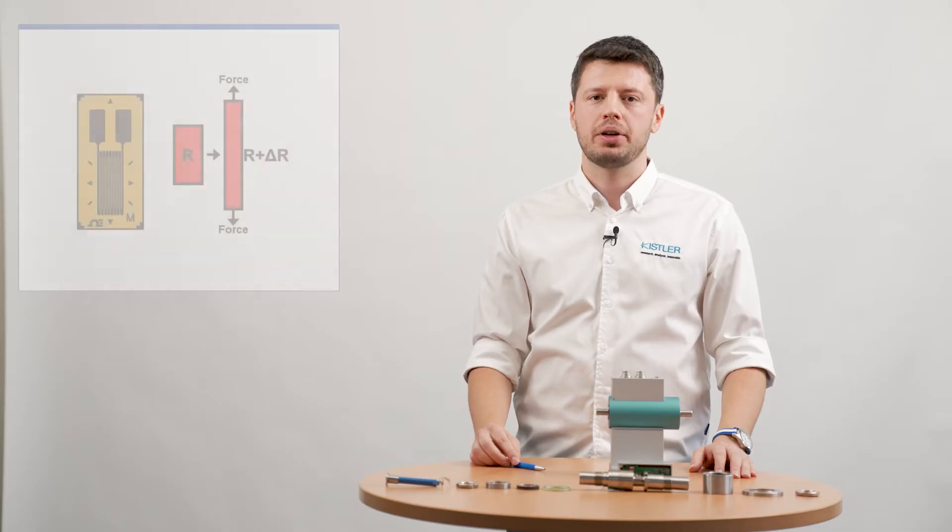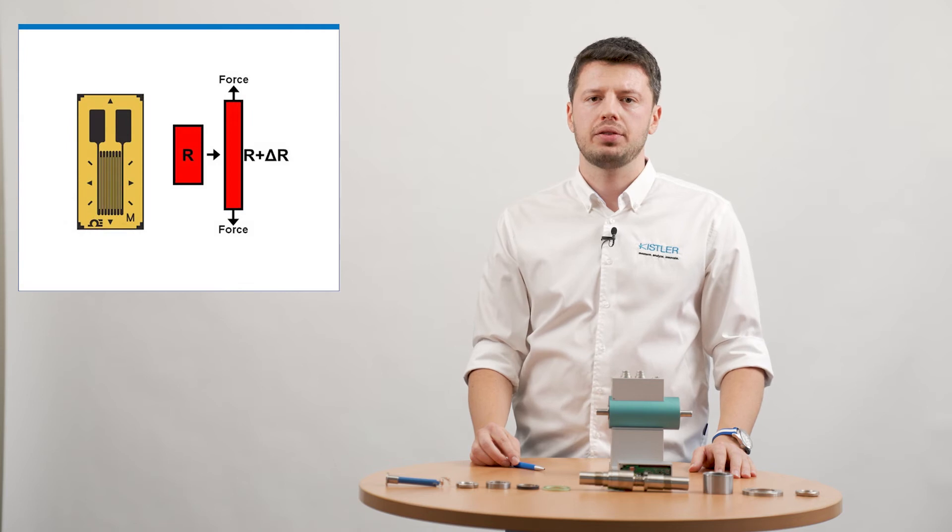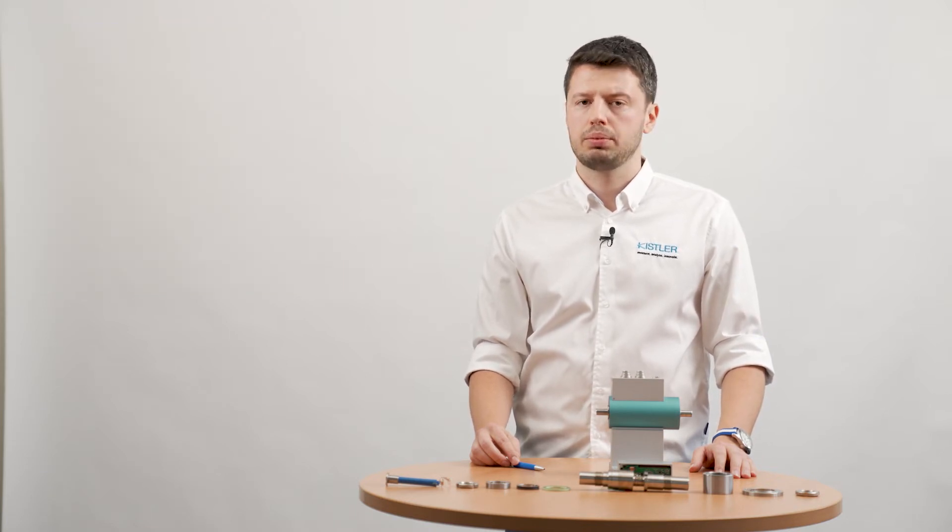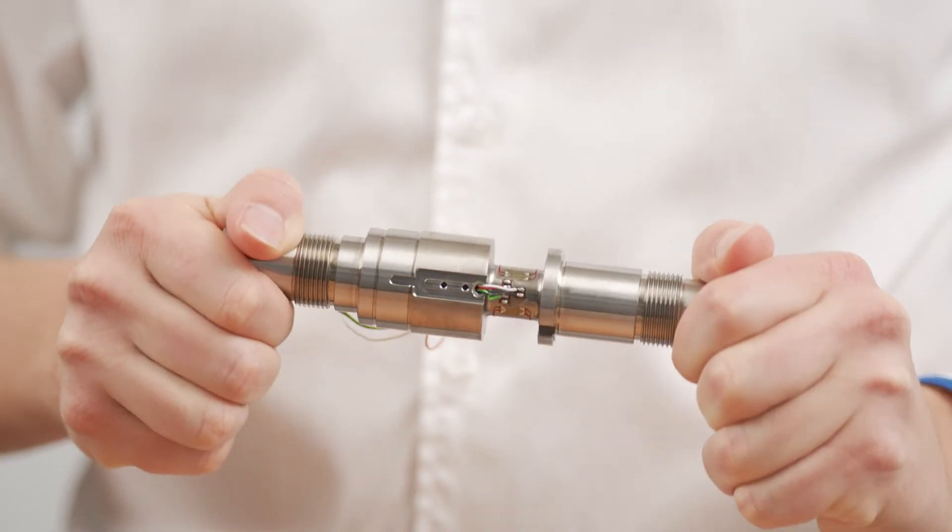Strain gauges are small measuring elements for detecting relative changes in length and use the physical effect that the electrical resistance of a wire changes in proportion to its elongation when stretched or compressed.